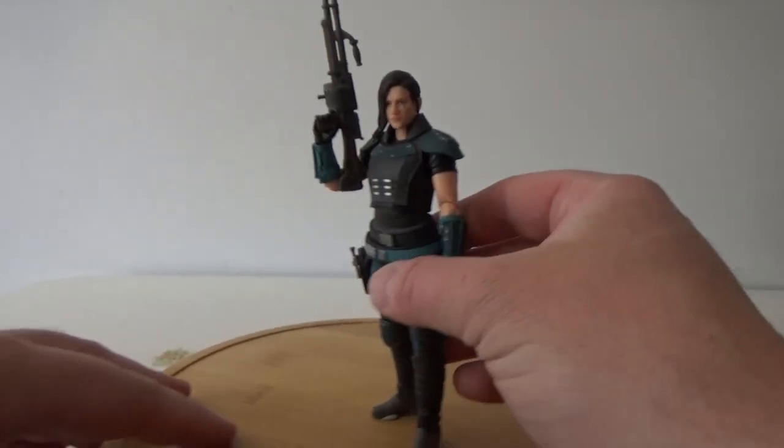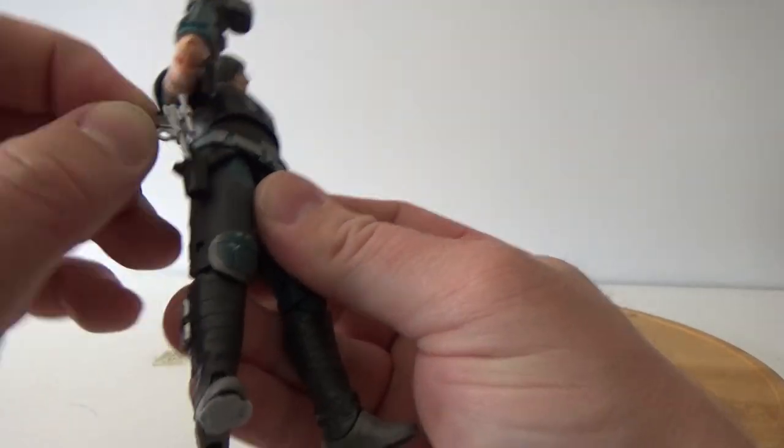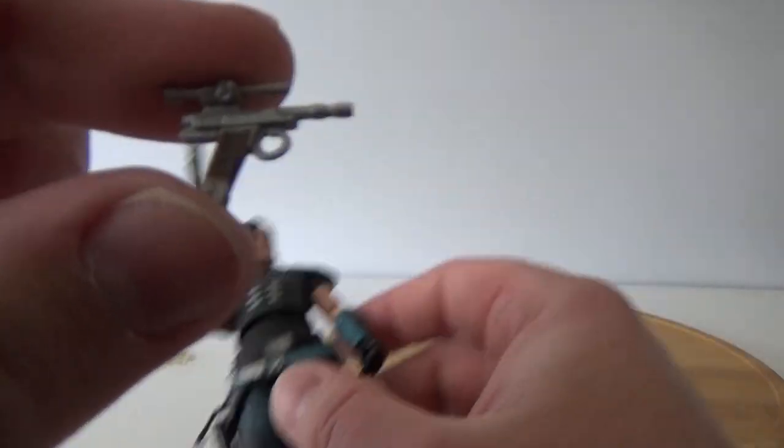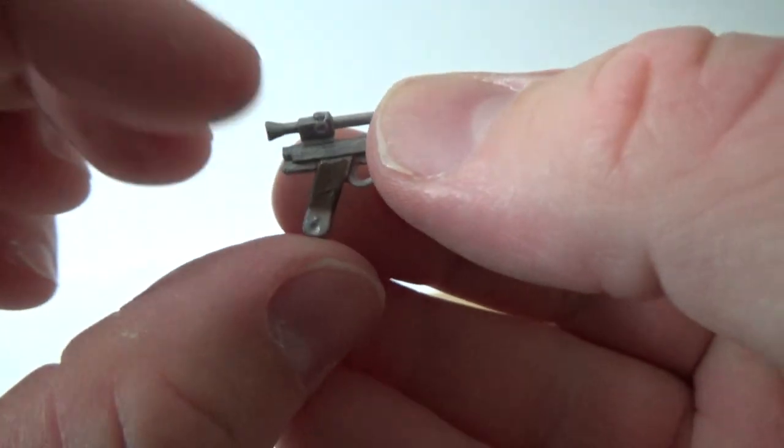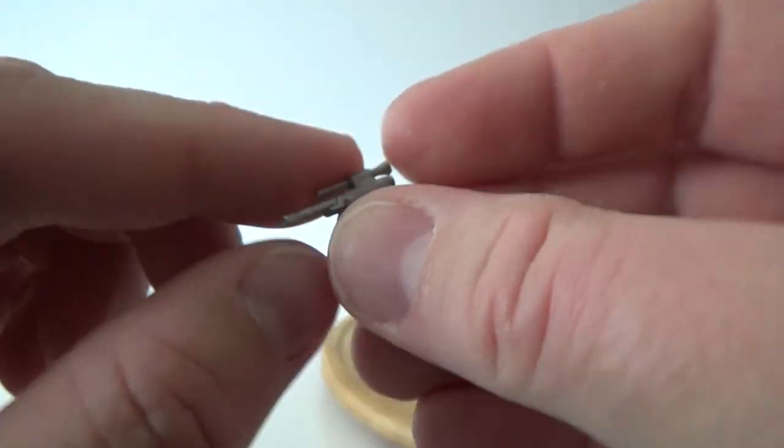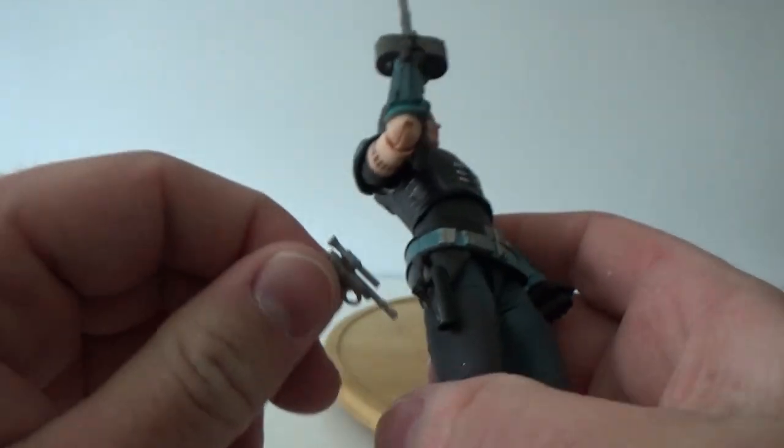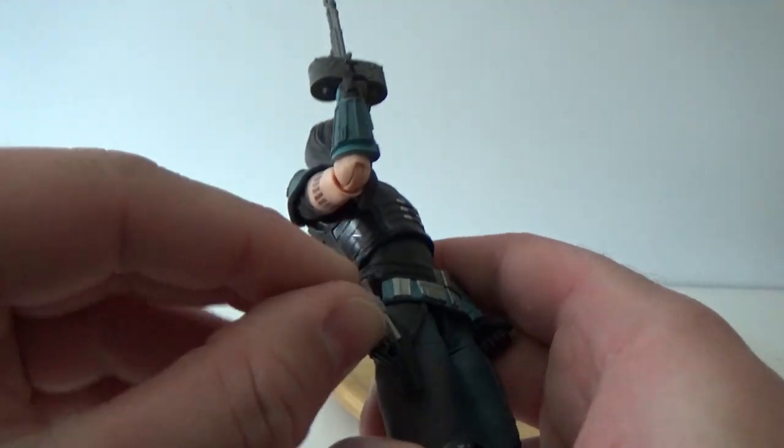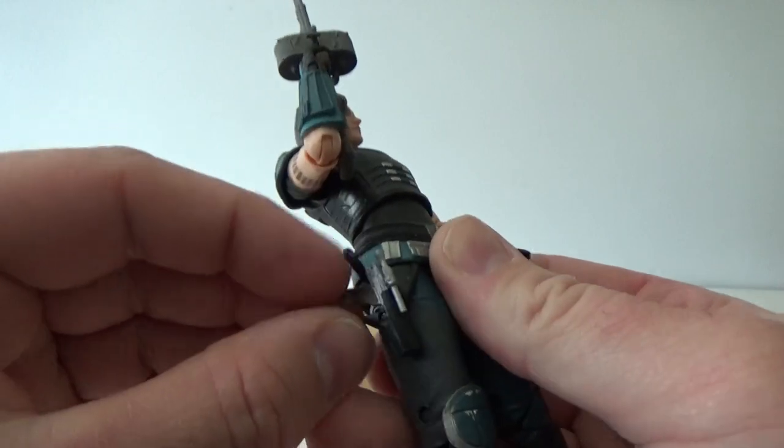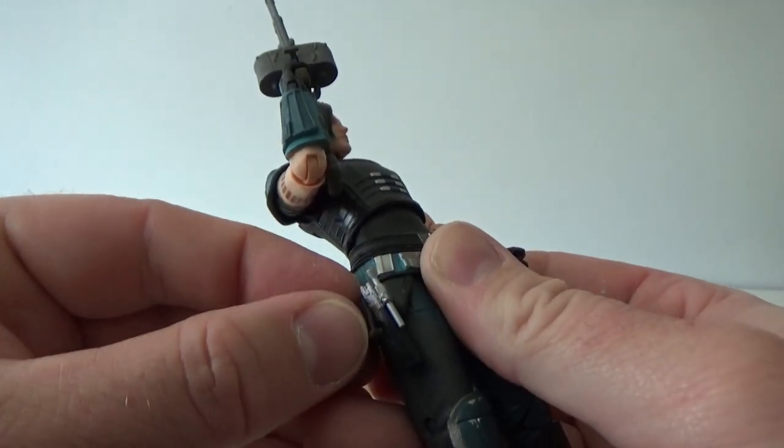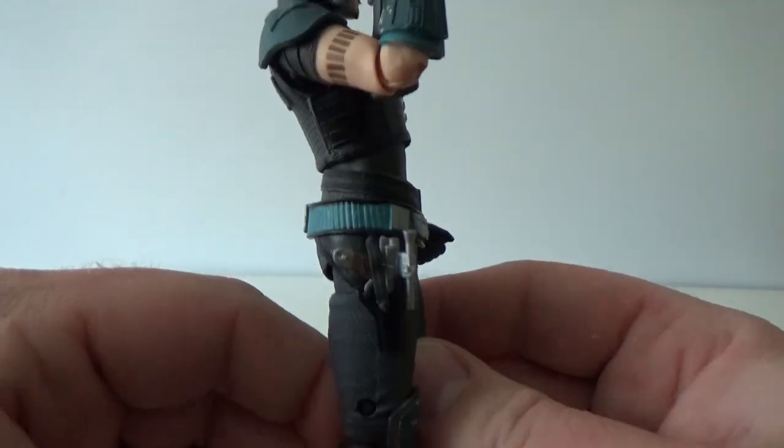So like I said, accessory-wise, she does have a small pistol here in her holster. Which reminds me of like, the noisy cricket from Men in Black. It's a tiny little thing, but I imagine she'll put it to deadly use. But it does fit nicely there in her holster. And it does peg, peg closed over the top there. So that looks pretty good.